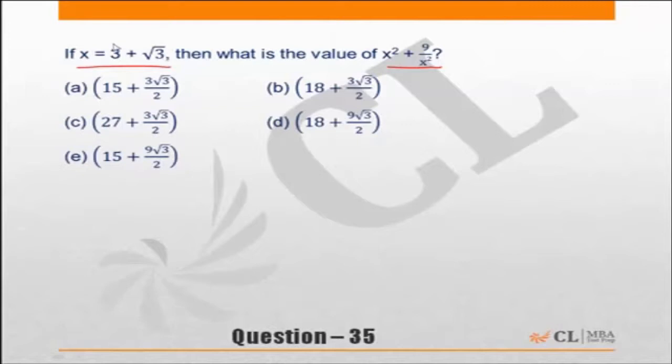root 3 I know is 1.7. I can say x is equal to 4.7. So x square plus 9 by x square is nothing but 4.7 square plus 9 upon 4.7 square. Now this obviously means I need to be comfortable with calculation which I am.